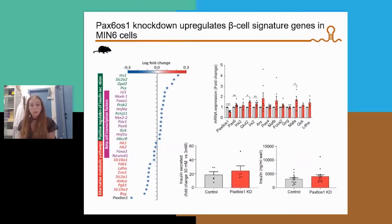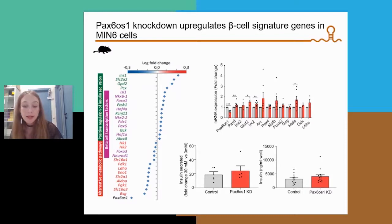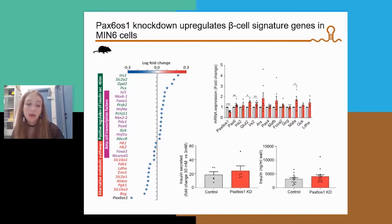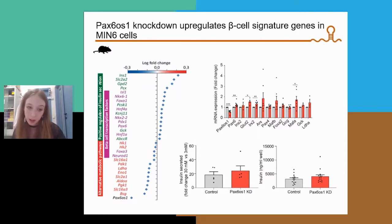To determine the function of this lncRNA in beta cells, we performed an RNA-seq experiment in MIN-6 cells treated with a siRNA against Pax6-OS1. We observed that knocking down this lncRNA increased the expression of insulin and several other beta cell signature genes, while it decreased the expression of so-called disallowed genes — genes that are normally lowly expressed in beta cells compared to other cell types. However, we did not observe any differences in glucose-induced insulin secretion.